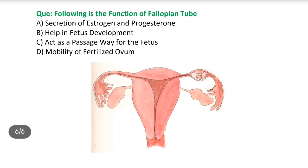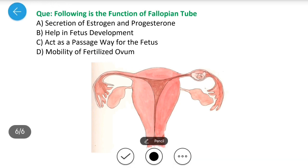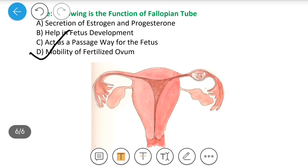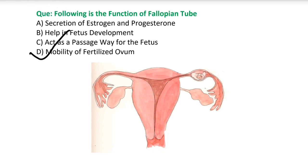Next question: The function of the fallopian tube is — A) secretion of estrogen and progesterone, B) help in fetus development, C) act as a passage way for the fetus, D) mobility of fertilized ovum. Answer is mobility of fertilized ovum. Conception के बाद product fallopian tube से होते हुए uterus में आ जाता है और वहाँ implant हो जाता है.